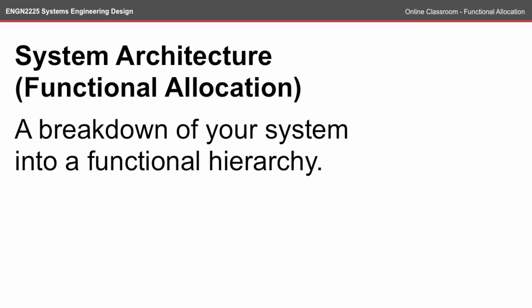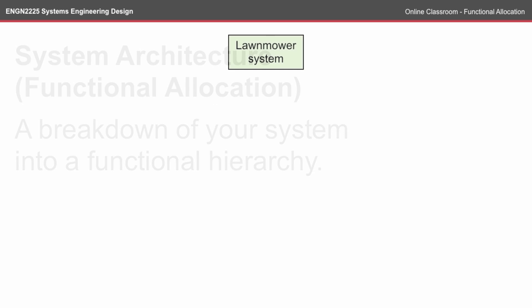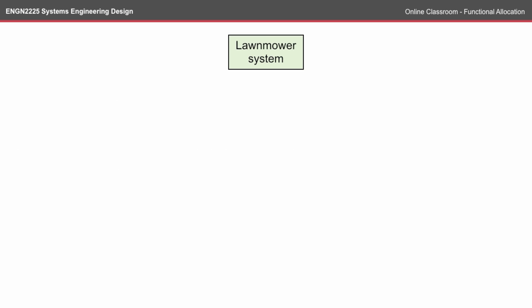The system architecture, also known as the functional allocation depending on what level you're applying the hierarchy, is a breakdown of the system into a functional hierarchy. We're going to look at the different functions and how you might allocate them into different hierarchies. We should start with a top-level description of our system — 'lawnmower system' seems an appropriate name.